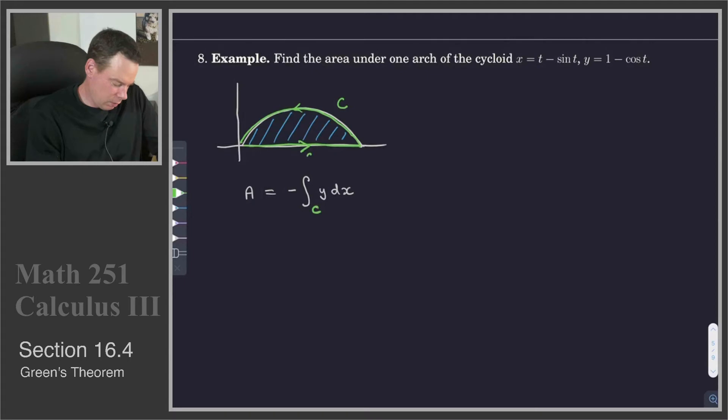So what is our parameterization for our curve C? Well, there's actually two parts of it. There's a C1 and a C2. So let's go ahead and get these two parts.